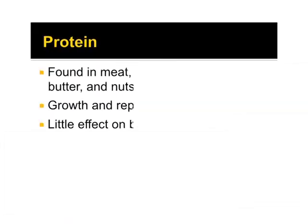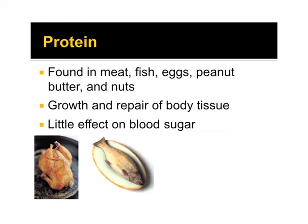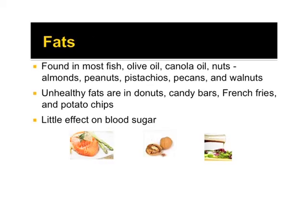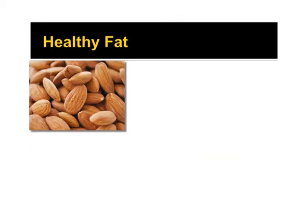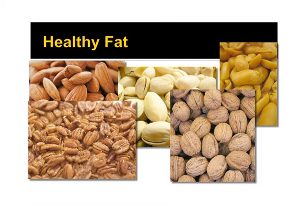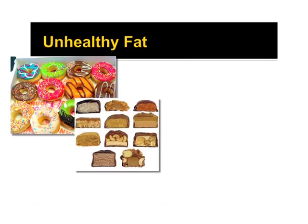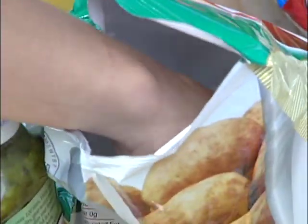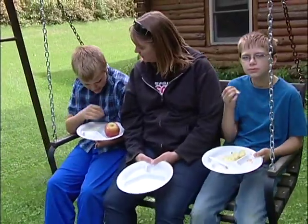The next basic food category is protein. Protein is found in meat, fish, eggs, peanut butter, and nuts. Protein is needed for growth and repair of body tissue. Protein does affect blood sugar, but not quickly. The final basic food category is fat. A well-balanced diet includes a limited amount of fat. Healthy fat is found in most fish, olive oil, canola oil, and nuts such as almonds, peanuts, pistachios, pecans, and walnuts. Unhealthy fat is found in foods such as donuts, candy bars, french fries, and potato chips. These food choices are not healthy for anyone to eat on a regular basis. Fat has little or no effect on blood sugar.